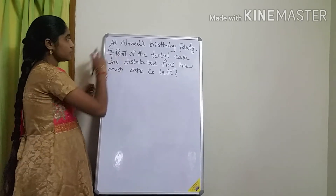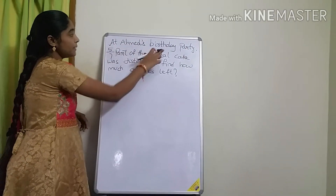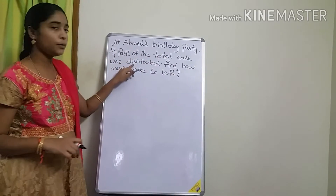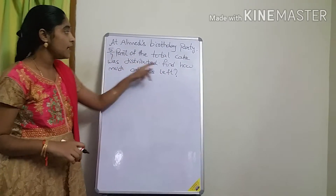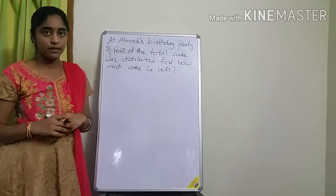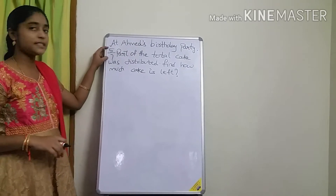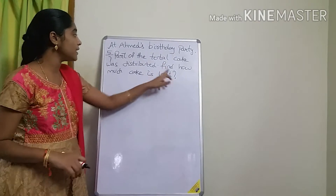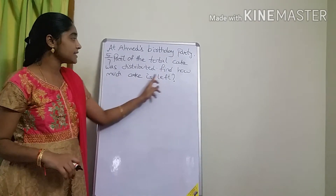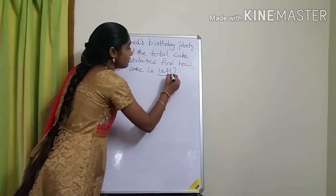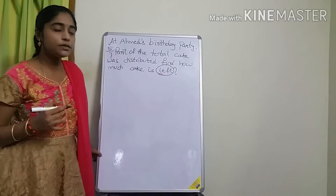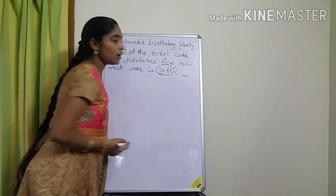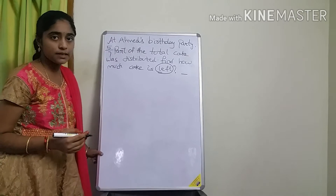See this word problem first of all. At Ahmad's birthday party, 5/7 part of the total cake was distributed. Find how much cake is left. Here, only one fraction is given. They didn't mention any other fraction. They asked how much cake is left. If you see the word 'left,' what do we use — plus or minus? We will subtract.